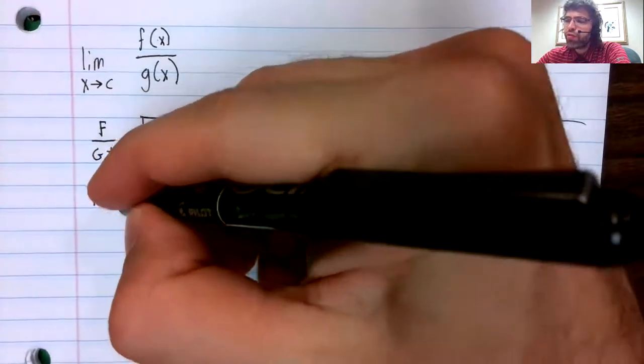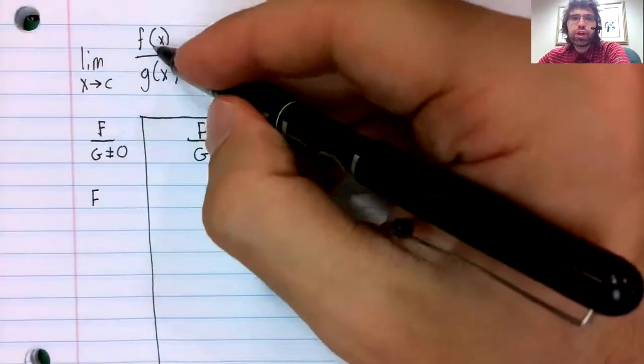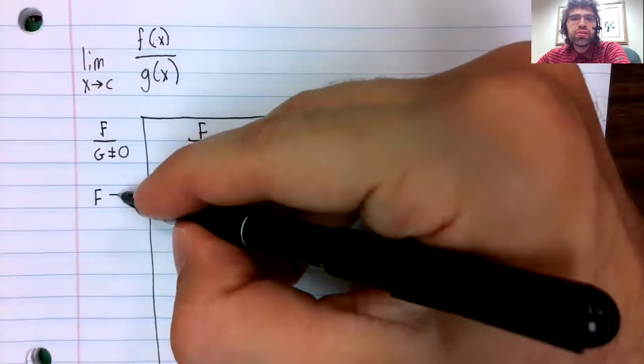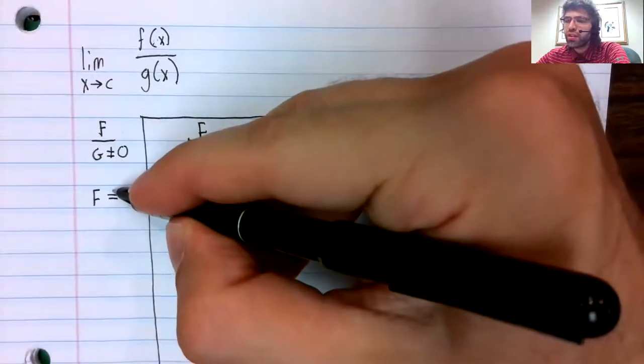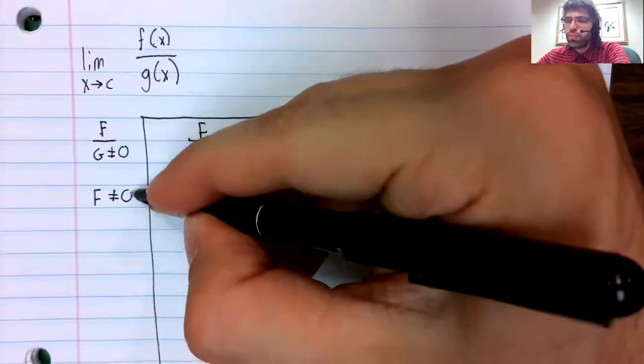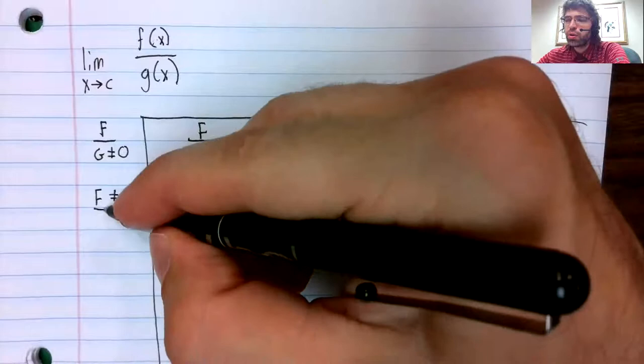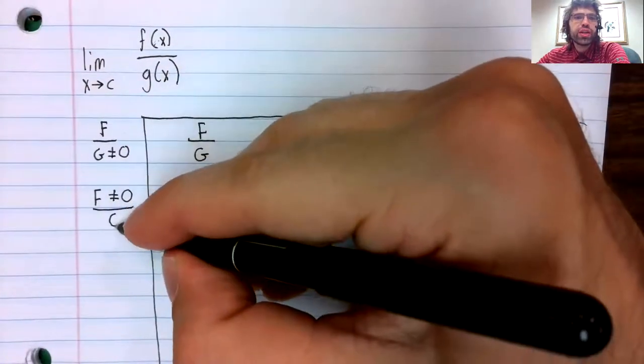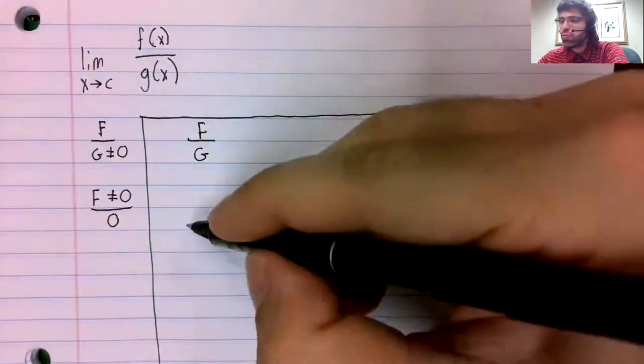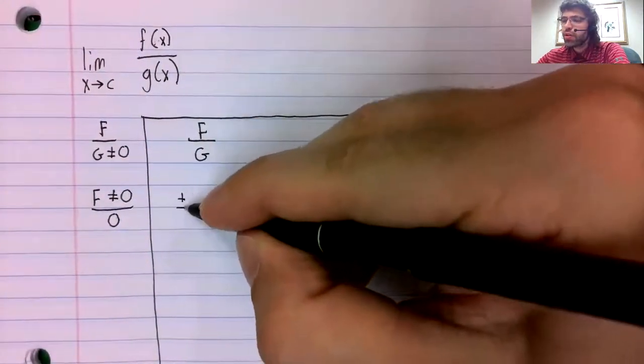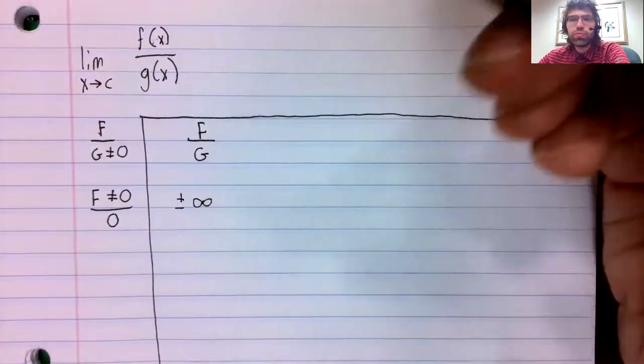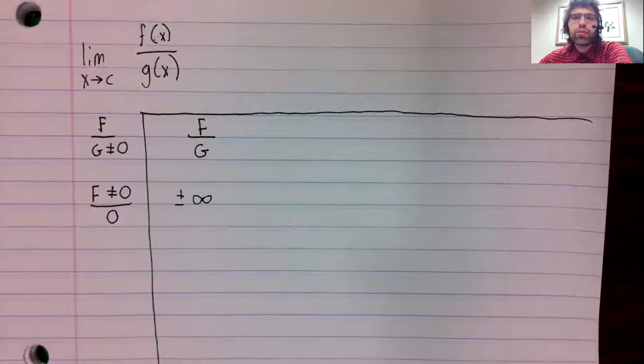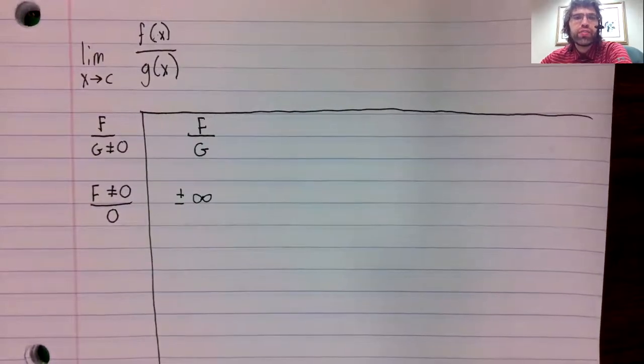If f of x approaches a non-zero finite number but g of x approaches zero, this limit explodes. The one-sided limits are either infinity or negative infinity.